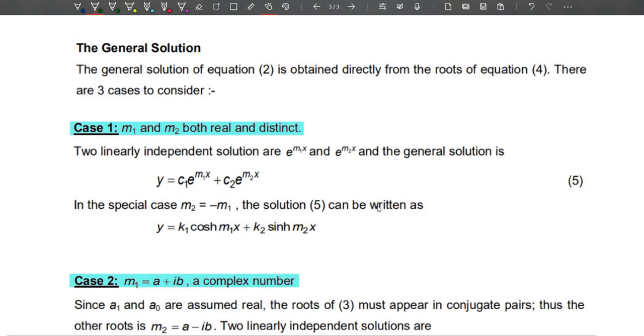And the general solution is y = c_1 e^(m_1 x) + c_2 e^(m_2 x). In the special case, m_2 might be equal to negative m_1, and here the solution for this equation can also be written as y = k_1 cosh(m_1 x) + k_2 sinh(m_2 x). This is what we will be using later on for Laplace equation.